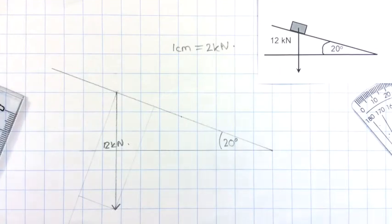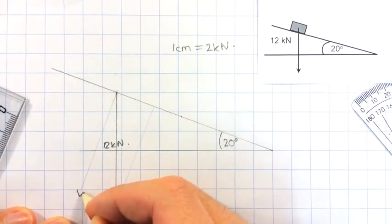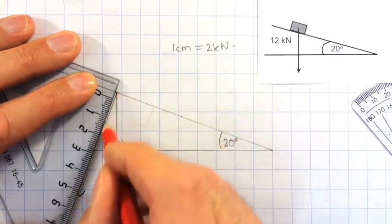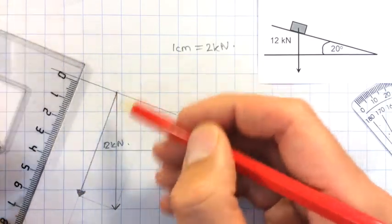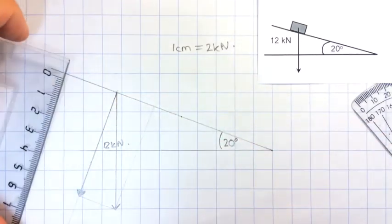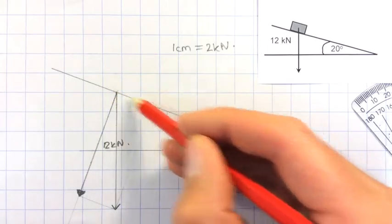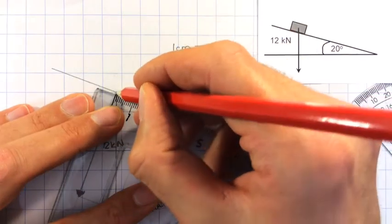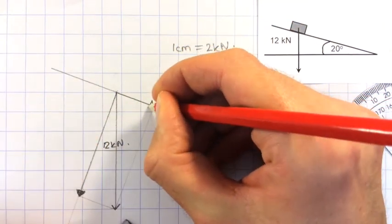Now, I can draw in my two components. My component into the slope is going to be this vector. And that will normally be balanced by a reaction force from the slope. And then my component going down the slope will be this vector here.